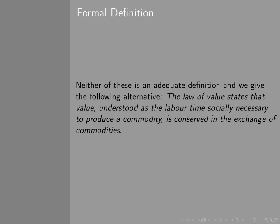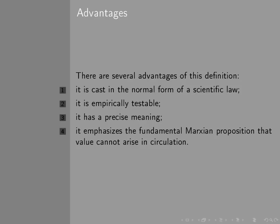The problem is that none of these are formal definitions. I think I would like to define it as follows. The law of value states that value understood as the labour time socially necessary to produce a commodity is conserved in exchanges between commodities. I think that is the essence of what is being said in the first volume of Capital. There are several advantages to defining it this way. It's stated in the form of a normal scientific law. It's empirically testable, has a precise meaning, and it emphasises the fundamental Marxian proposition that value cannot arise in circulation.